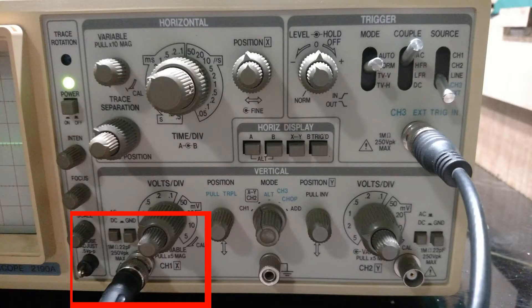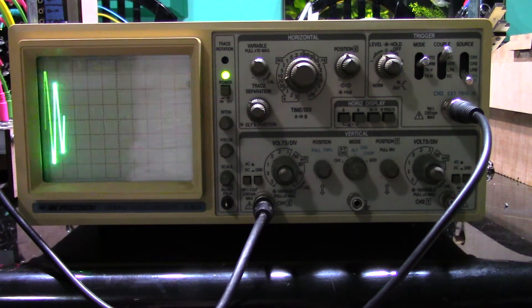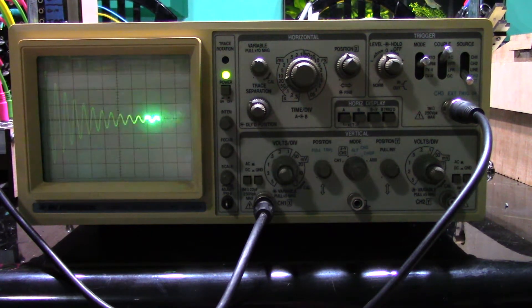So the first thing to do is hook up a signal so you have something to display. I'm using the output of a bass drum module.